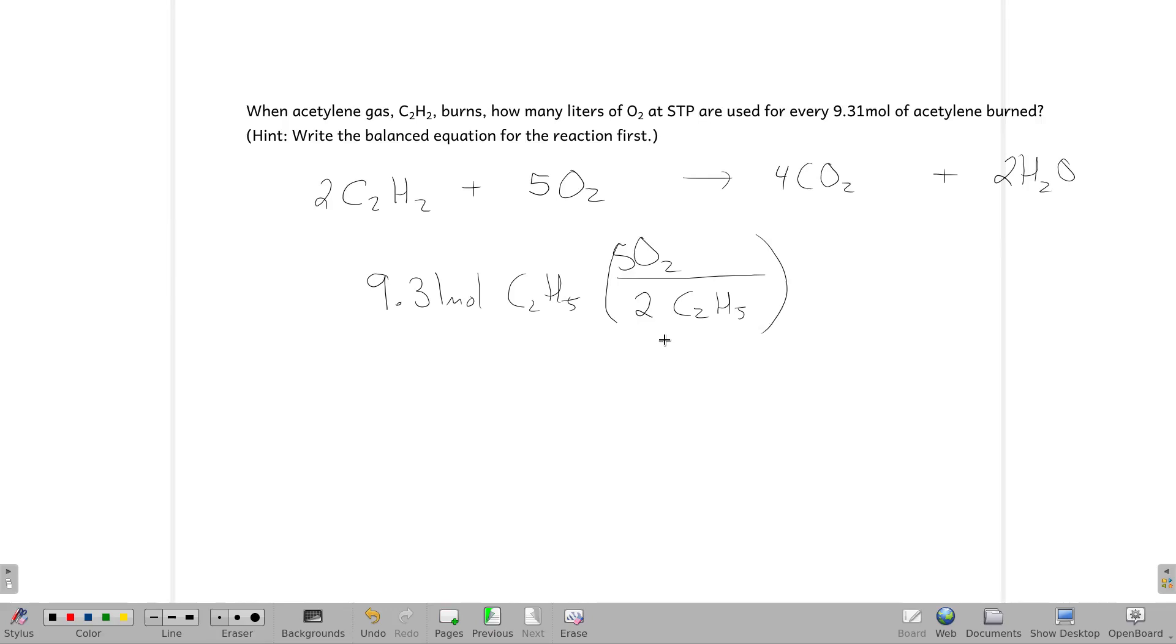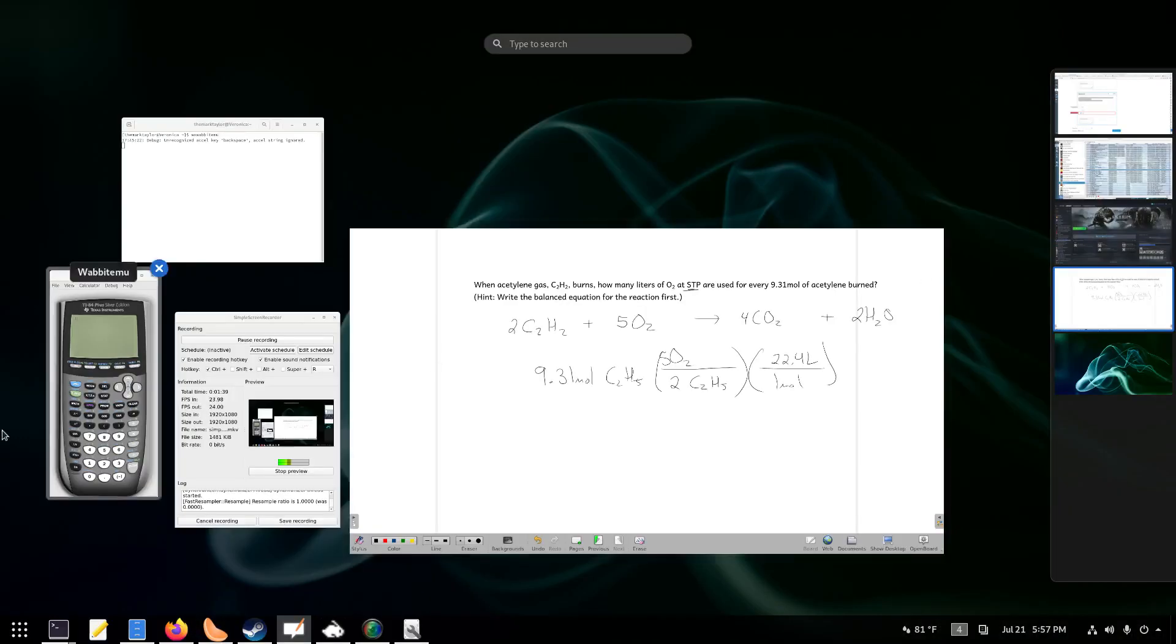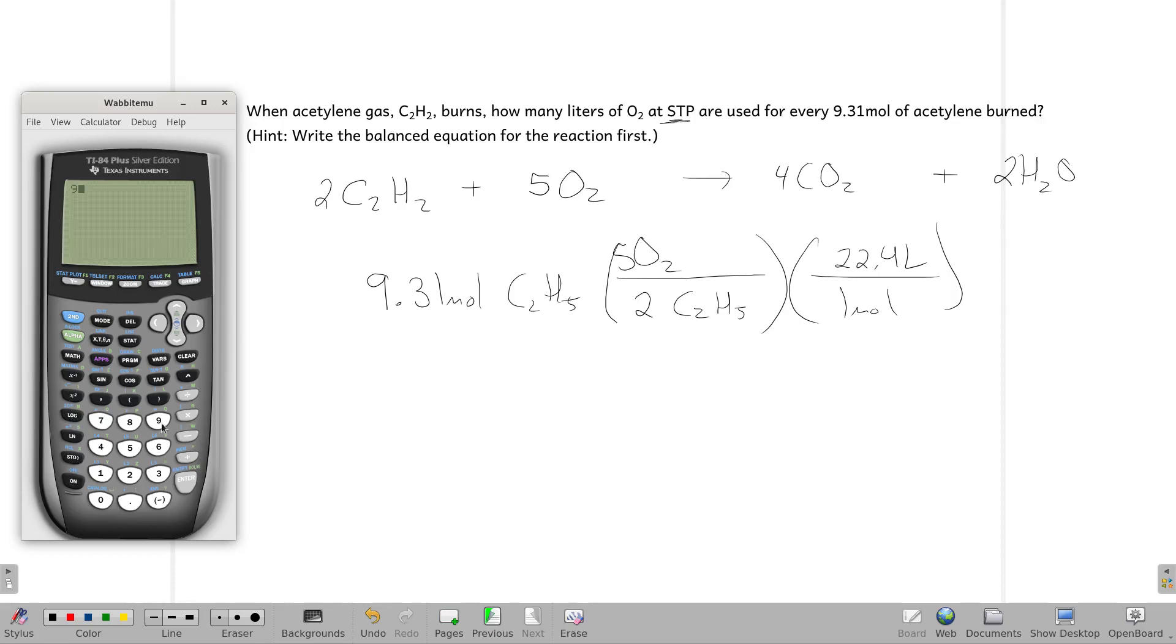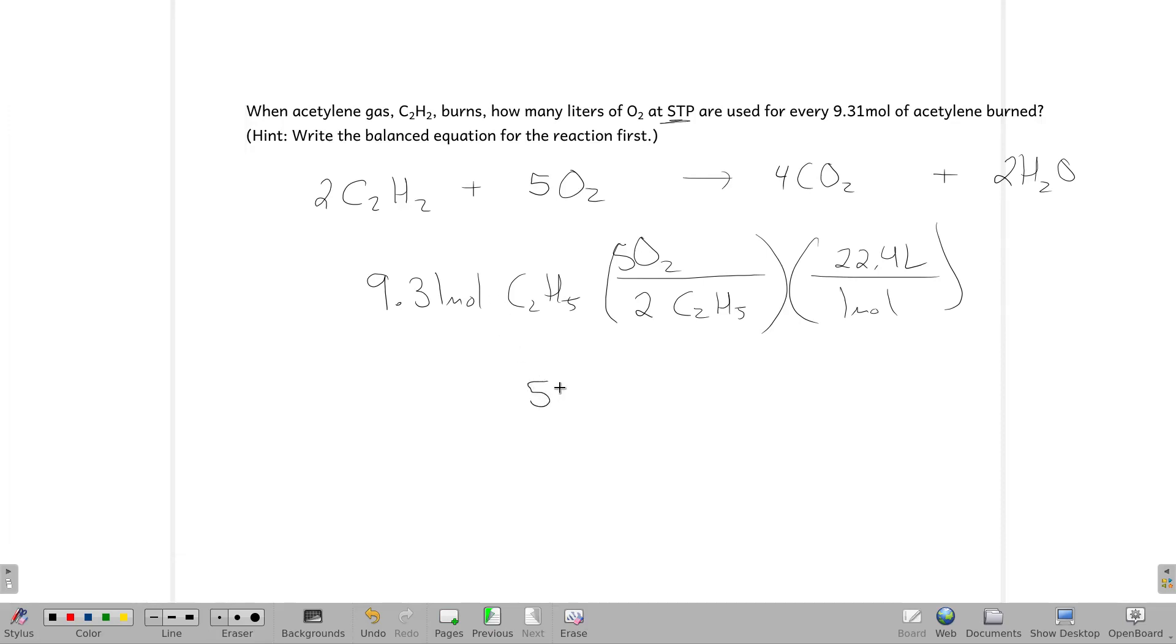So that gives us a conversion factor. And, nice thing this being at STP, we have that nice little relationship that one mole of any gas occupies 22.4 liters. So, 9.31 times 5 divided by 2 times 22.4 gives us 521 liters.